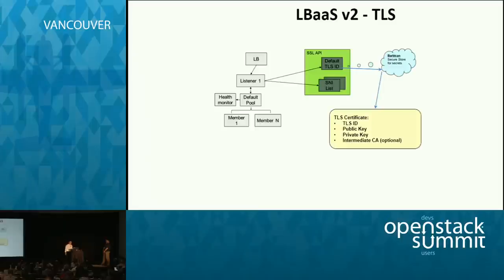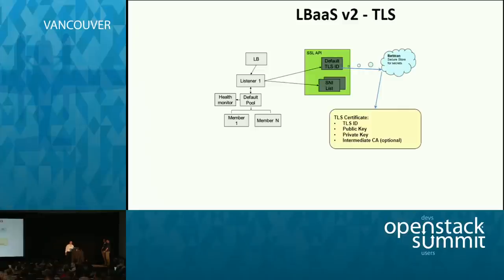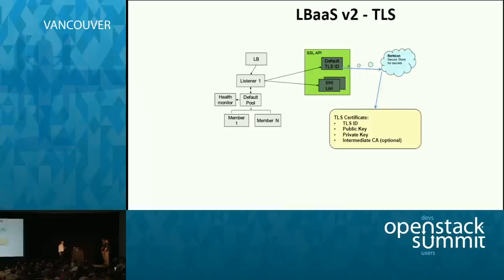SNI is also part of V2 TLS. The Neutron team was not willing, due to security reasons, to allow storing the certificate in the Neutron database. So a key requirement was to have a secret store, which is now called the Barbican project, which stores TLS certificates for LBaaS. There is linkage between LBaaS and those security stores. On the LBaaS API, you reference certificate IDs that are stored in Barbican. On the Barbican side, you store the public key, the private key, and if needed, the intermediate CAs. This allows an IP with different TCP ports to do TLS termination, also with virtual hosting.